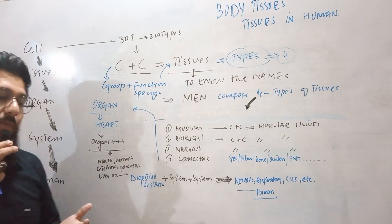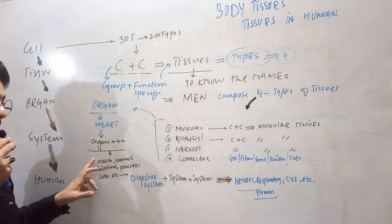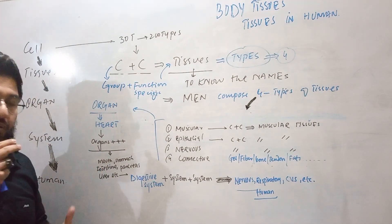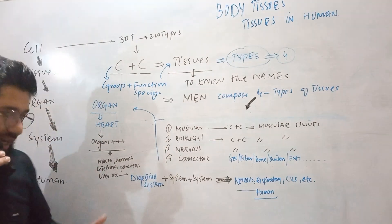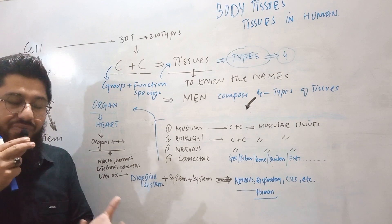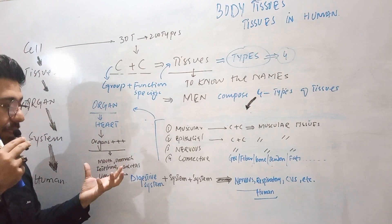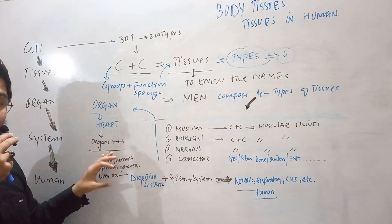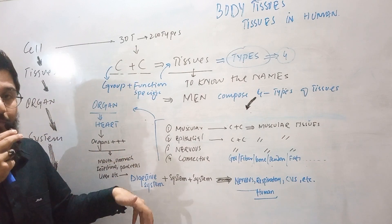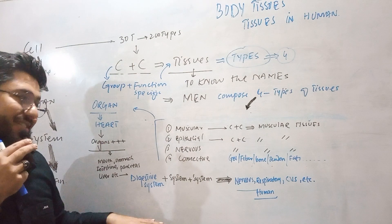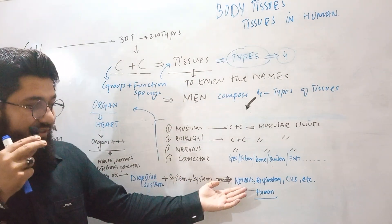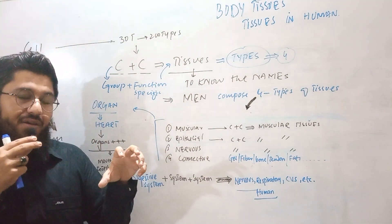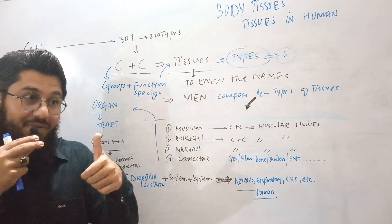Now, organs like the heart — in the body, with many organs like mouth, stomach, intestine, pancreas, liver, etc. — the GIT and some other organs — when they group together, they make a particular system: the digestive system. A digestive system has a specific job: to digest food. So group of tissues form organ; group of organs for a specific function form a system. Then group of systems — digestive, nervous, respiratory, cardiovascular, reproductive, etc. — combine together for a specific function, giving birth to a human body.